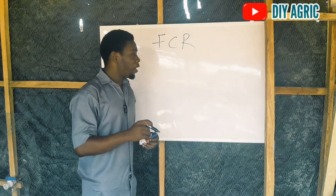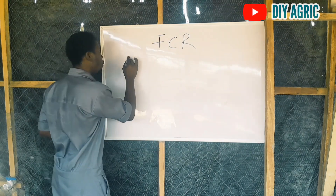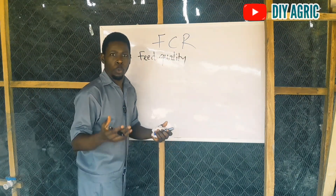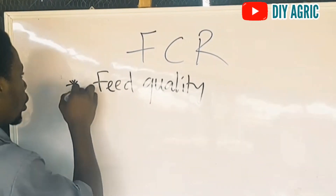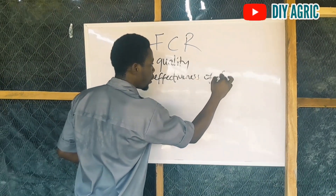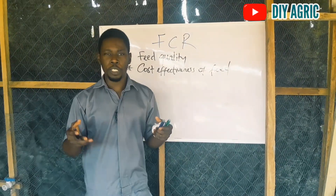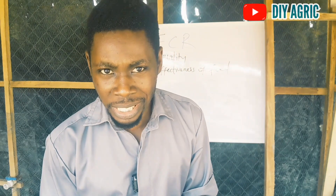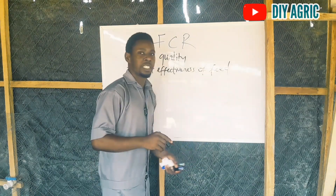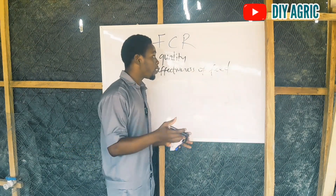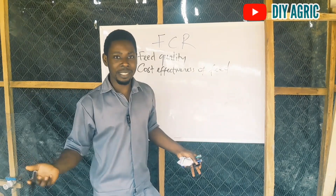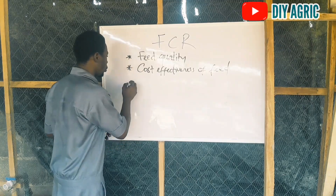Your FCR will tell you four things. First, the feed quality — how much quality is in the feed you used. Second, the cost effectiveness of the feed. Oftentimes you have to go for more expensive feed for better results, but not all expensive feed is good. That is why you have to check for cost effectiveness using your FCR. If your FCR is increasing — for example, from 1.84 to 1.86 — that feed is not good, no matter how much you paid for it.